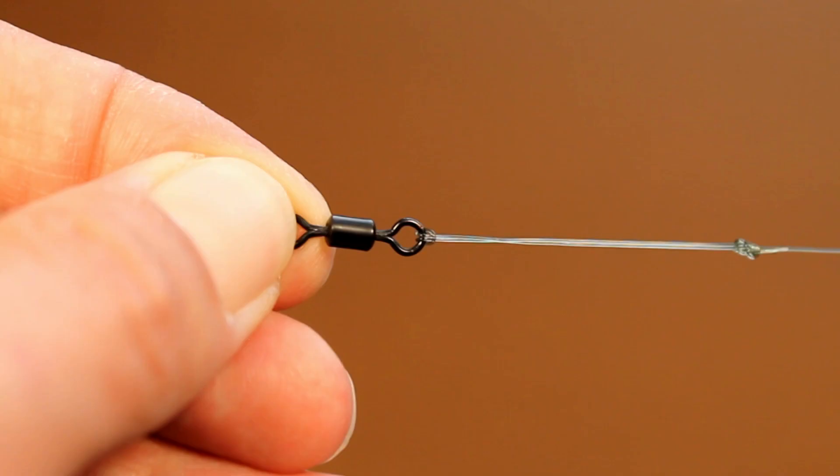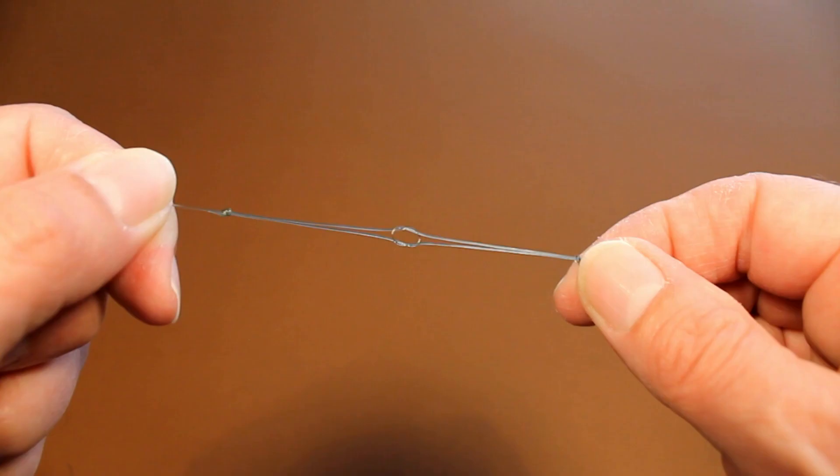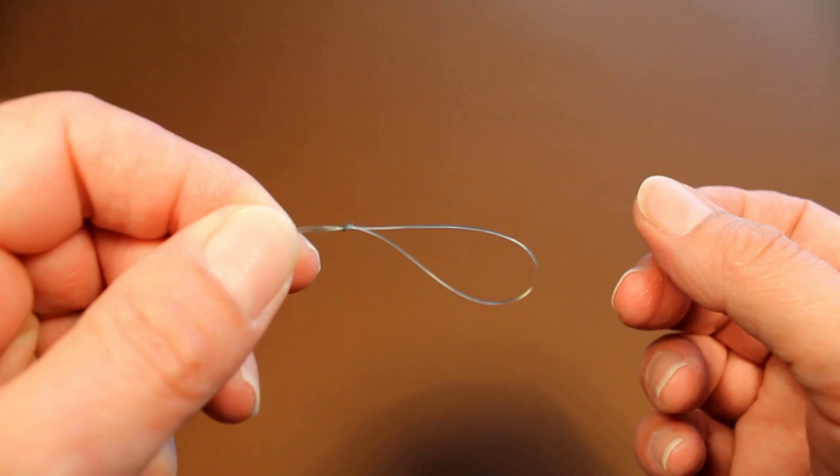Figure of Eight Loop Knot for easy attachment of anything with an eye and for loop to loop line connections. It can be used with monofilament, copolymer, fluorocarbon, or braid lines.